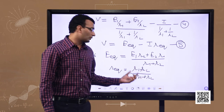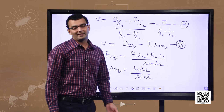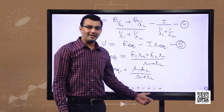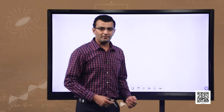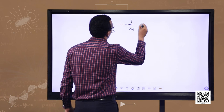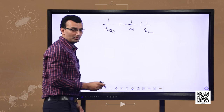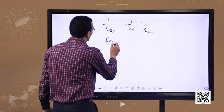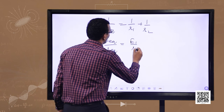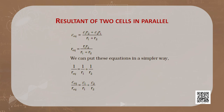These are the two expressions for the equivalent EMF and equivalent resistance. They can also be written in a different form: 1/R_equivalent equals 1/R1 plus 1/R2, and E_equivalent/R_equivalent equals E1/R1 plus E2/R2. This expression can be generalized for any number of cells. Let us now solve a few problems.